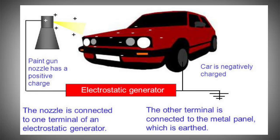The second application is car painting. Using an electrostatic generator, the paint is given positive charges and the car body is given negative charges. So the paint will be evenly distributed over the body. If we use the electrostatic principle, we can directly paint it and the paint will be evenly distributed. This is the car painting application.